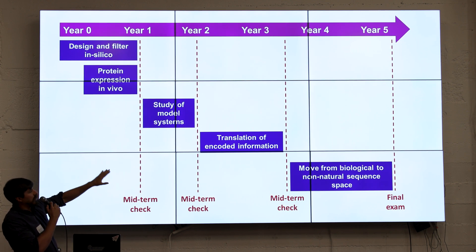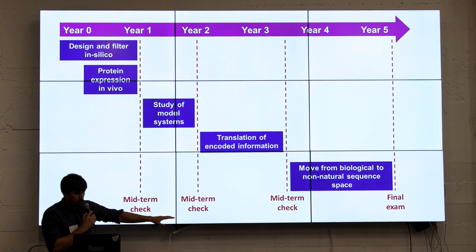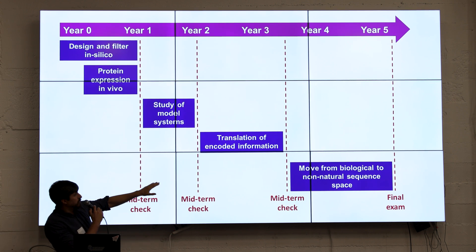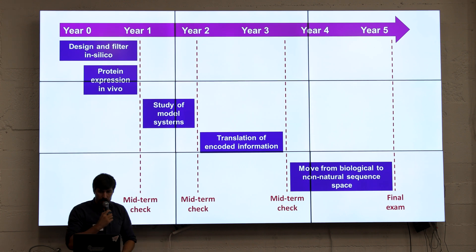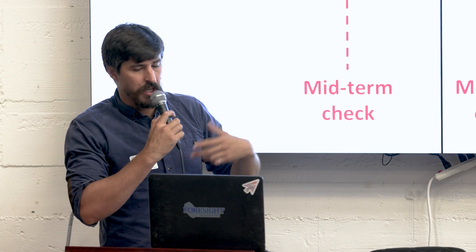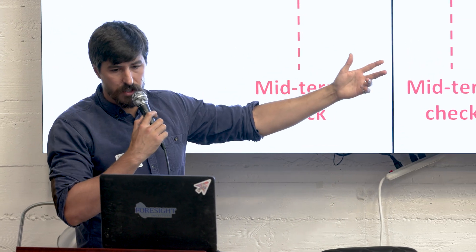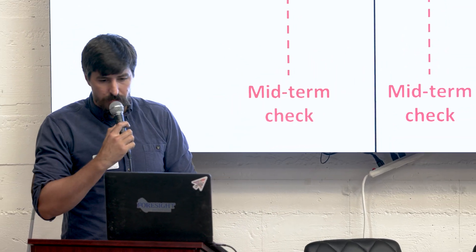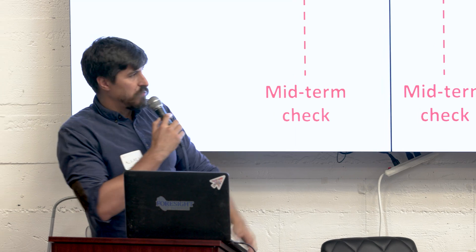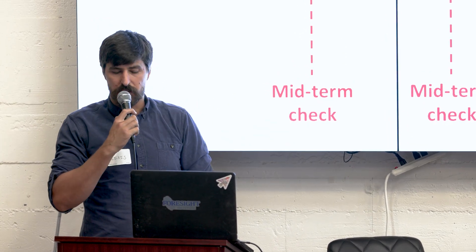We expect that to take around two years, maybe more. But then the most difficult part would probably be to go further and have something that's efficient at reading the information polymer and then synthesizing something that can fold into the shape we want. And then if we have that, we can move forward to actual applications.